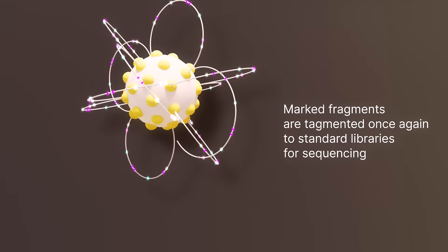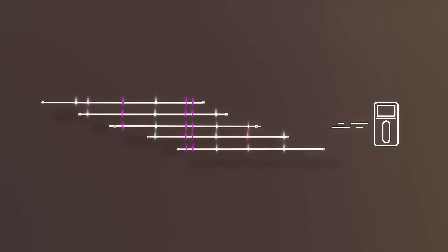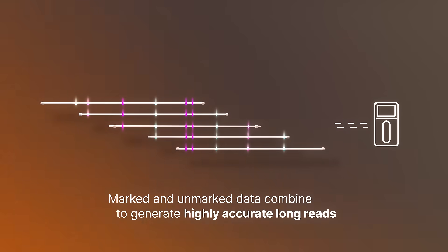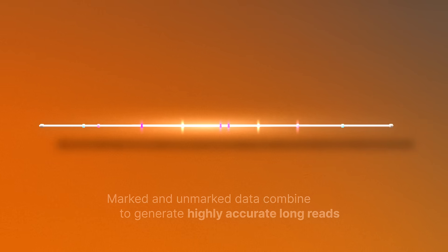Landmarked fragments are tagmented once more into a sequencing-ready library. During analysis, we generate long reads and combine the data with a standard unmarked whole genome library to produce highly accurate Illumina Complete long reads.